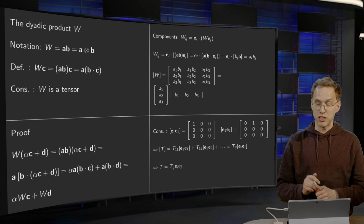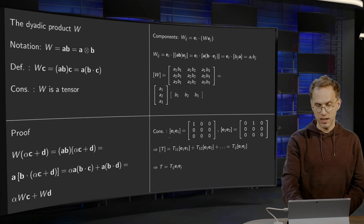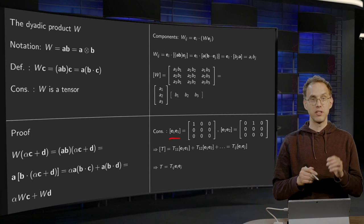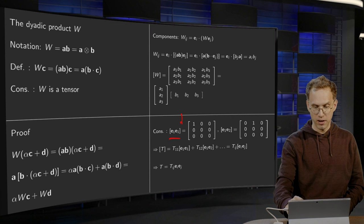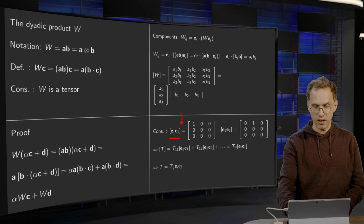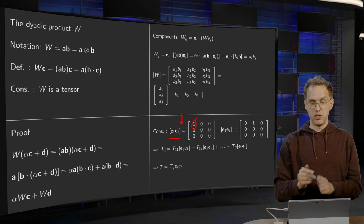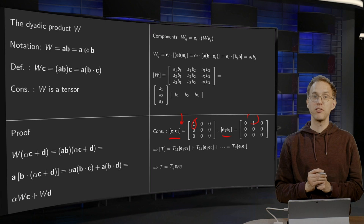A consequence, a nice consequence of this, is if you take simple dyadic products, like E1 times E1 and then the matrix. If you take E1 times E1, you basically have 1, 0, 0 times 1, 0, 0, you get this matrix over here. With only a 1 here, zeros everywhere else. And if you take E1 times E2, again, you get only 1, 1 over here in this case, and zeros everywhere else.